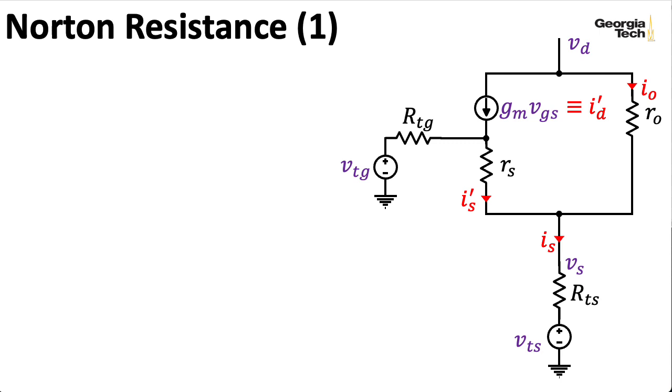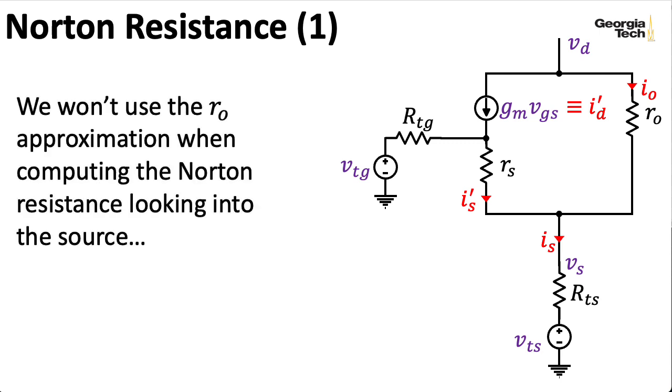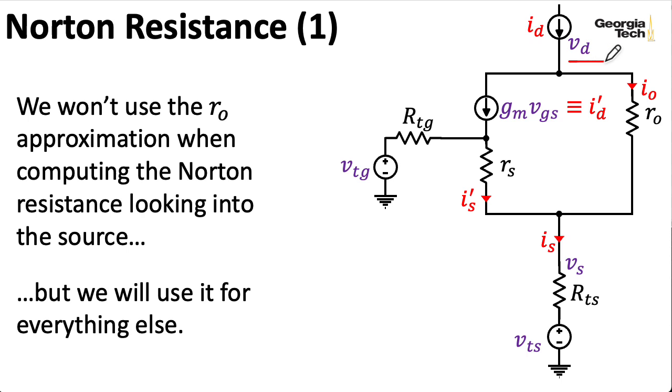Now let's talk about the Norton resistance. Of course, for this to make sense, we can't use the R0 approximation here. But we are going to use the R0 approximation when talking about anything else. So I need to figure out how the voltage and the current at the terminal here relate. I can put a voltage source here and find the current. Here, I think it's a little easier to put a current source and then compute the resulting voltage. Now we're computing a Thevenin resistance, so I'm going to short out these voltage sources. So this and this goes straight to ground.